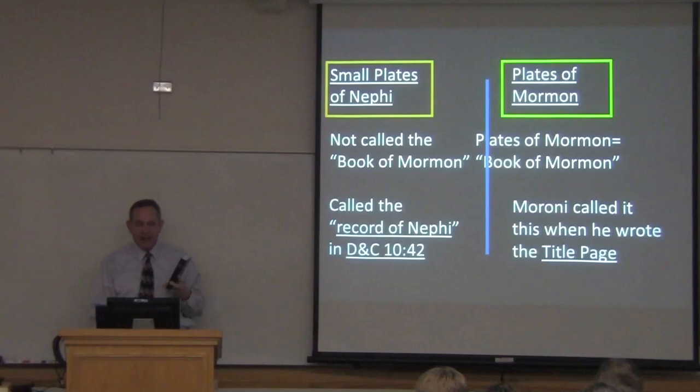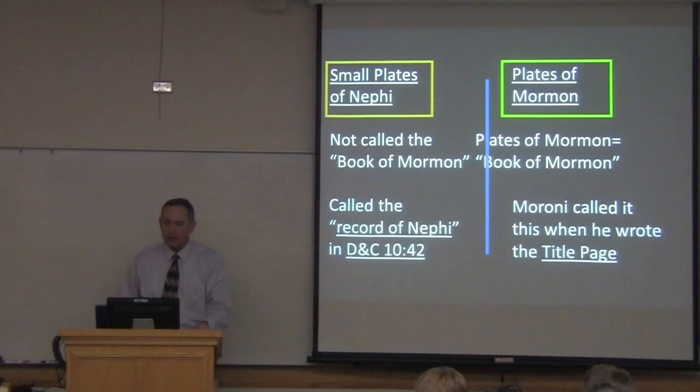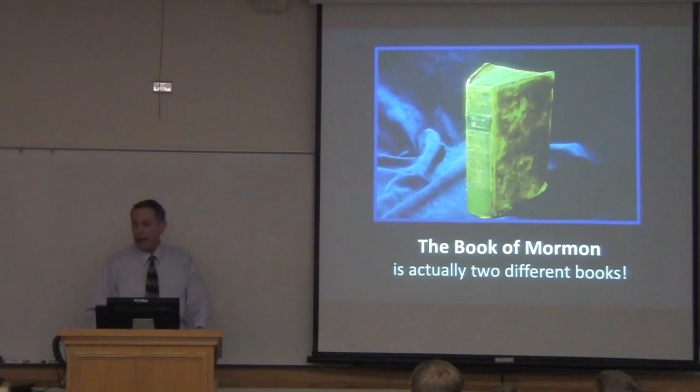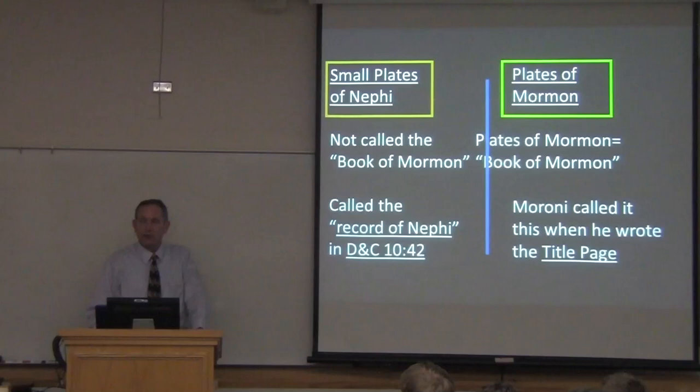Even though we don't make that differentiation so clearly in our own Book of Mormon, in the original edition the distinction was made in terms of Joseph Smith following the commandment of the Lord. Because in Section 10, the Lord had said you shall publish that information as the record of Nephi. In the 1830 edition of the Book of Mormon, Joseph Smith actually explained this in a special introduction.